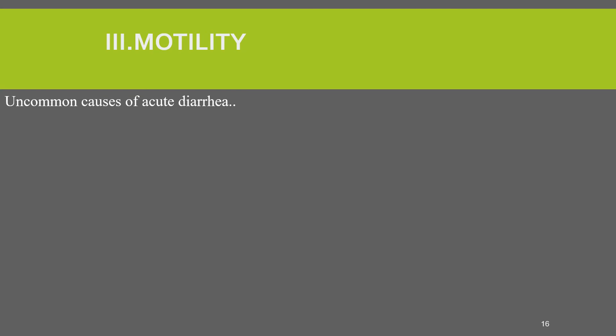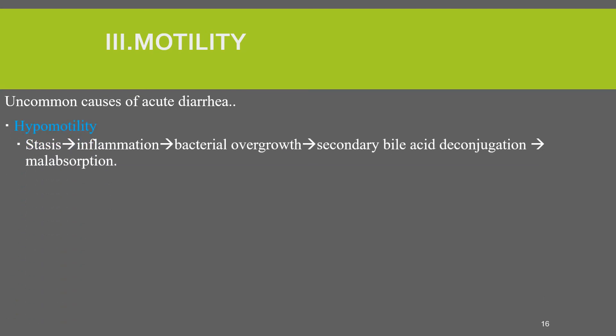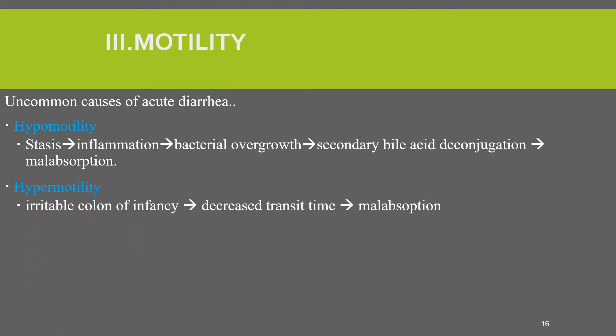The next mechanism is motility, a common cause of acute diarrhea. There are two types: hypomotility and hypermotility. Hypomotility causes stasis, which predisposes to inflammation and bacterial overgrowth, causing secondary bile acid deconjugation and malabsorption. Hypermotility — for example, irritable colon of infancy — causes decreased transit time and malabsorption.